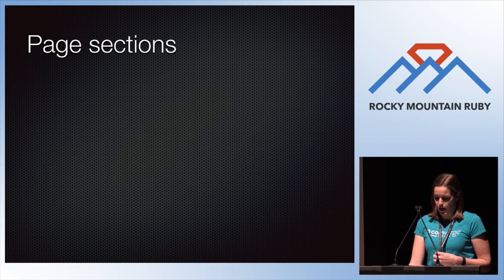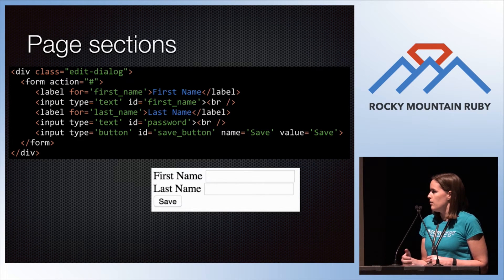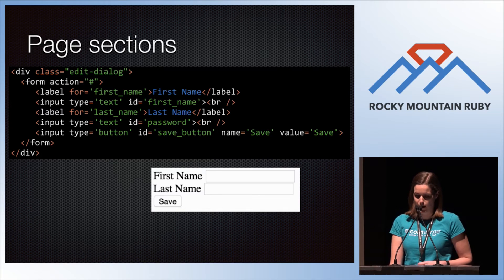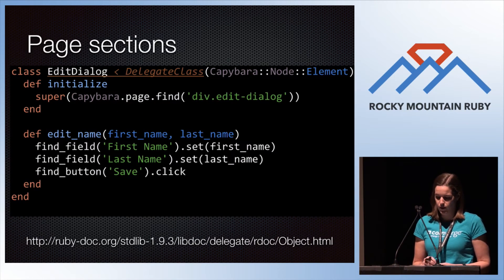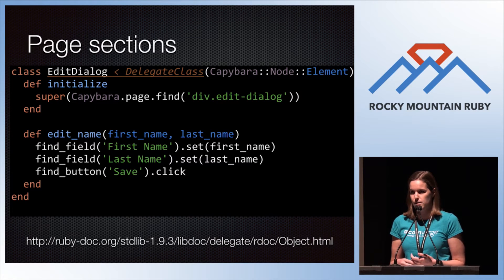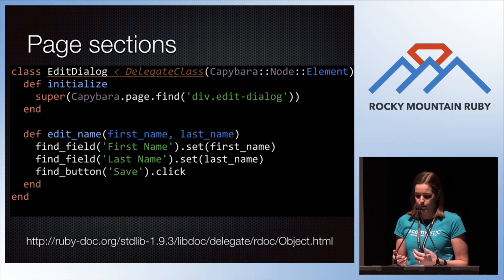Dialog boxes that pop up are a good example of page sections. Here's a hypothetical edit name dialog that pops up on the edit profile page — just a simple first name, last name, save — pretty similar to the register page. We want to make a page section for that. Capybara's find method — and other finder methods like first and all — returns a Capybara element that has helpful methods like click, fill_in, get the value, and that kind of thing.